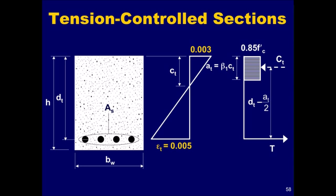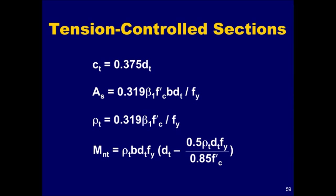Shown here are the strain conditions at the limit for tension-controlled sections. In this case, all appropriate parameters are given a subscript T. This is an important limit when determining the strength reduction factor of a section. The equations shown here have been derived from strain compatibility and equilibrium. They may prove useful in setting up design parameters for tension-controlled sections at a strain limit of 0.005 as a function of the compressive strength of concrete and the yield stress of reinforcement.